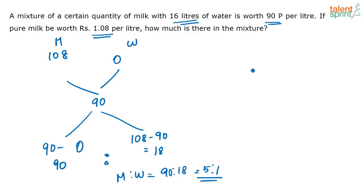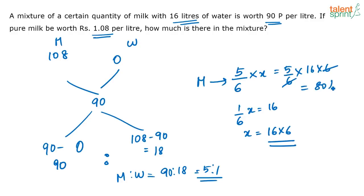Here, 1 by 6 of x is equal to 16. So what is x? x is equal to 16 into 6. So how much milk is there? 5 by 6 of x, that is equal to 5 by 6 into 16 into 6. It is equal to 16 into 5, that is 80 liters. So 80 liters of milk will be there in the mixture.